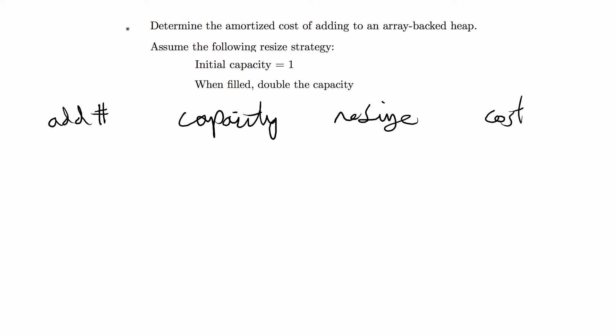Hey guys, in this video I'm going to do a question in data structures about amortized analysis. This one says determine the amortized cost of adding to an array-backed heap. We're just looking at the add method and it says assume the following resize strategy: the initial capacity is equal to one and when the array is full you double the capacity when you resize it to add again.